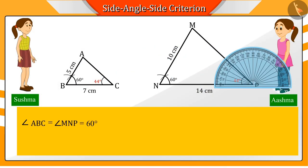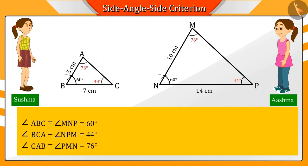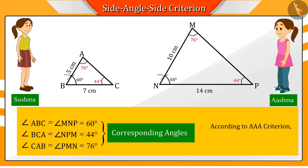Both of them measure the angles using a protractor and they find out that the corresponding angles of the triangles are equal. Then, Ashma says that according to the AAA criteria, the triangles ABC and MNP are similar to each other.